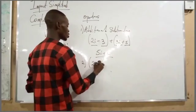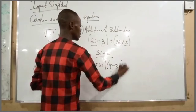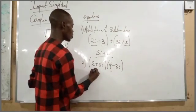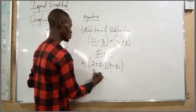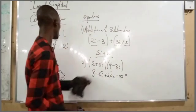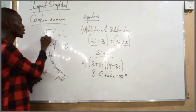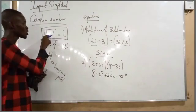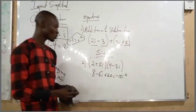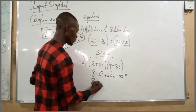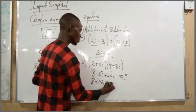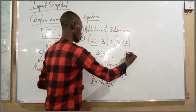Now the multiplication of complex numbers: for example, (2 + 5i)(4 − 3i). We expand: 2 times 4 gives 8, 2 times minus 3i gives minus 6i, 5i times 4 gives plus 20i, and 5i times minus 3i gives minus 15i². Since i² equals minus 1, minus 15i² becomes plus 15. Combining: 8 plus 15 is 23, and minus 6i plus 20i is plus 14i, giving us 23 plus 14i.